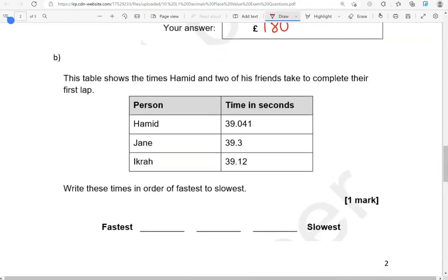So we've got Hamid takes 39.041 seconds, Jane takes 39.3 seconds, Ikra takes 39.12 seconds.